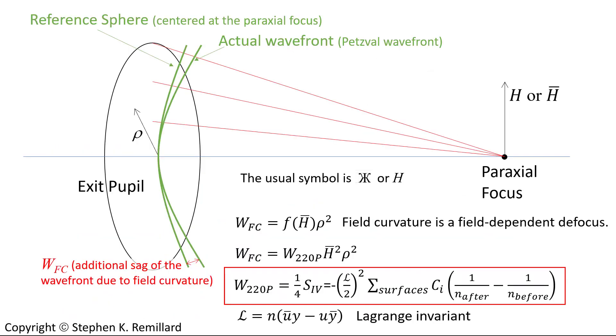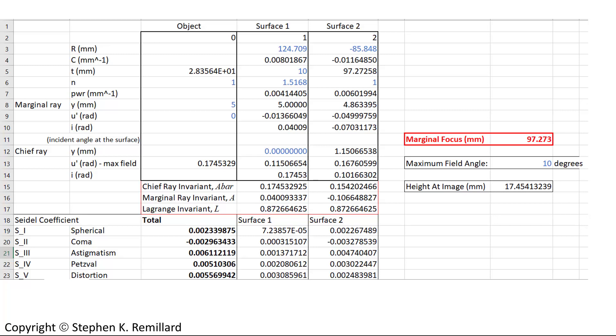I will put this expression for S sub 4, the Seidel coefficient, into my Y and U spreadsheet, and calculate the Petzval curvature for a lens. I have shown this Y and U spreadsheet with this same lens designed in other videos.